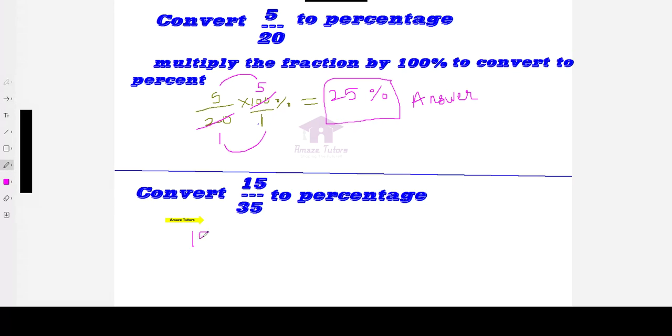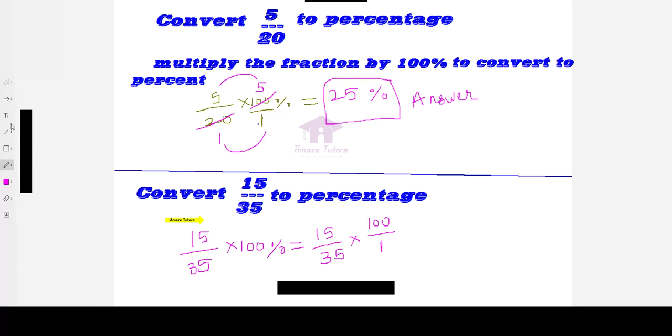Again, what is the step? Multiply by 100%. Now this can be written as 100 by 1 as a fraction. Now we can cancel out here also, but it is not as easy as the first one, but still it's possible.